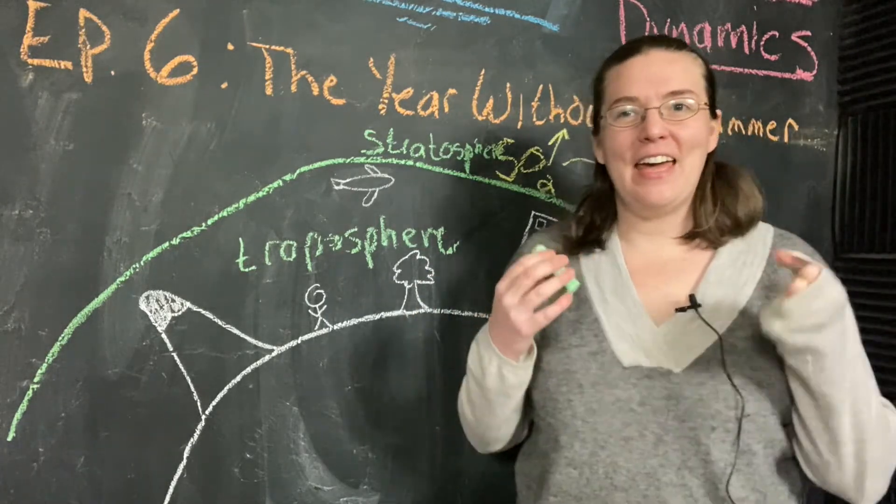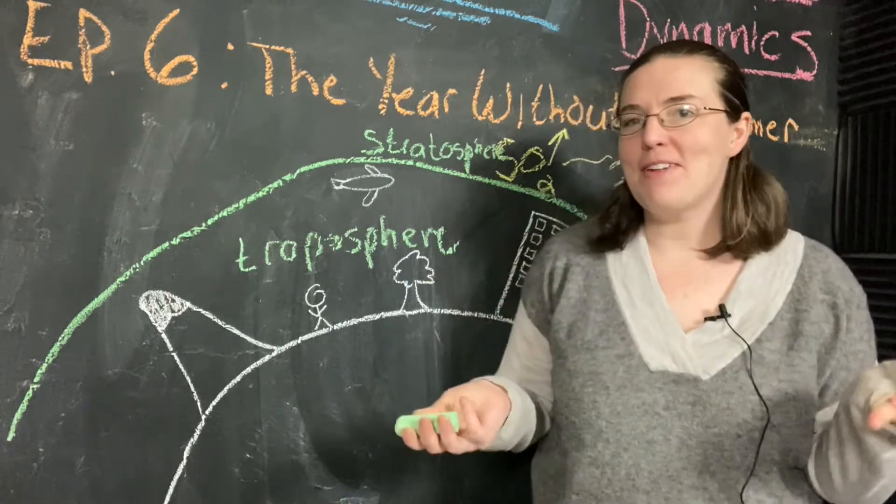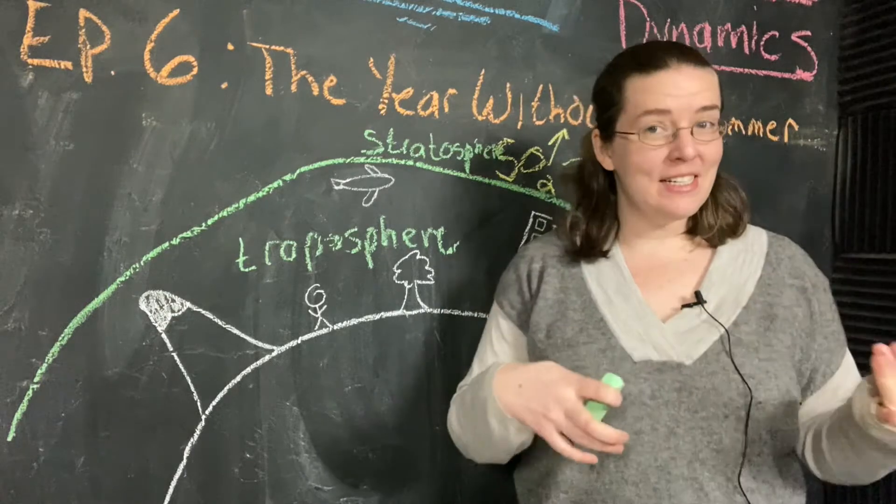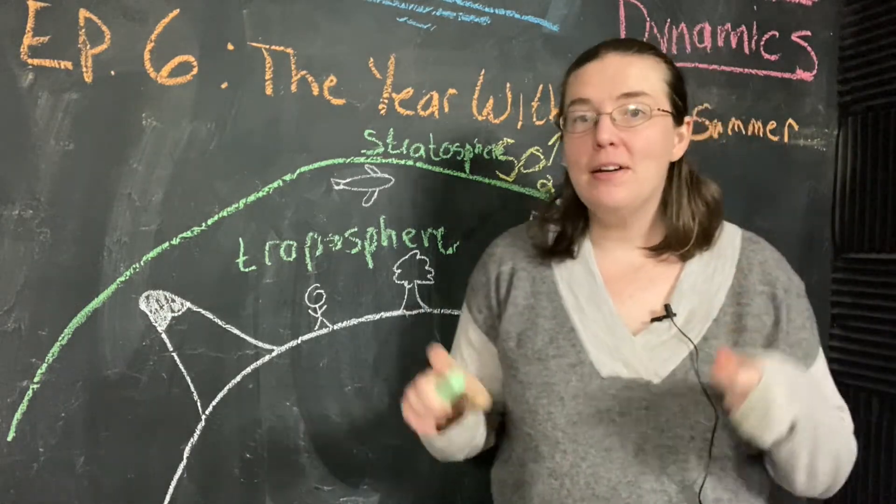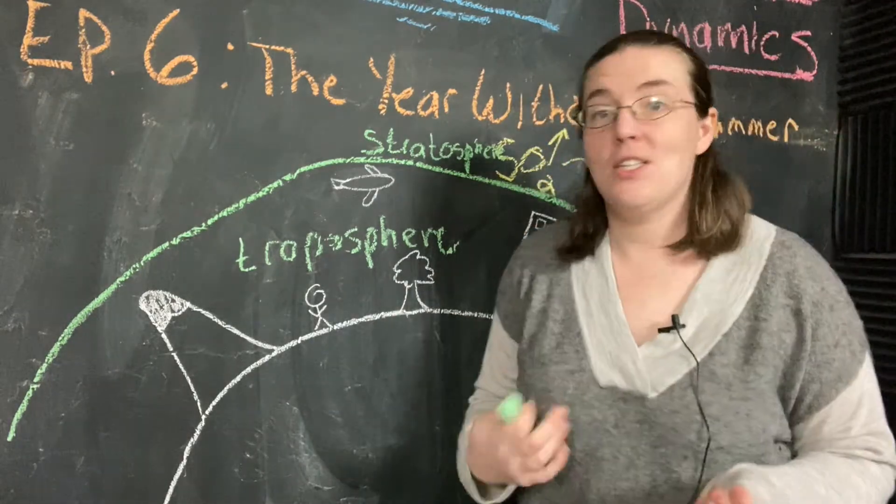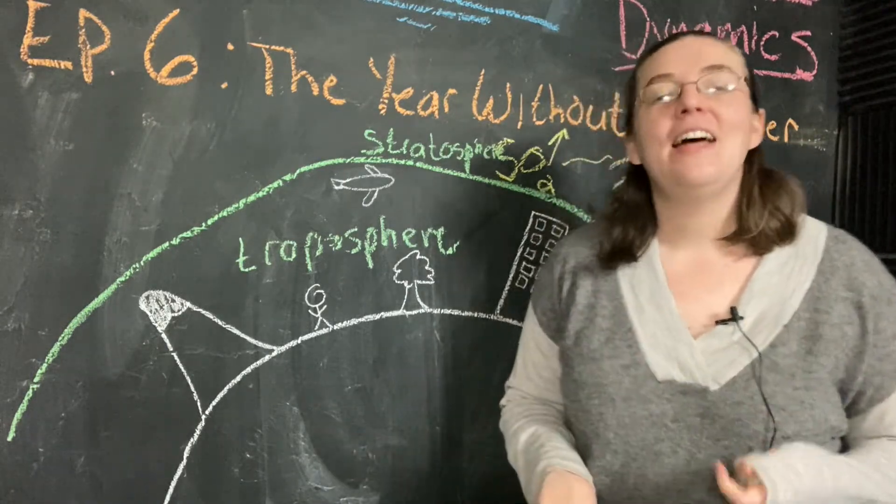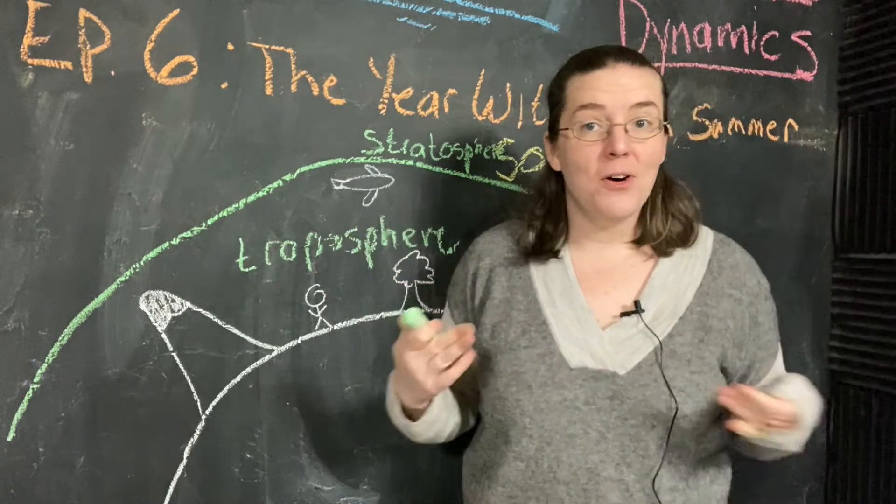How long a specific gas or particulate or aerosol is going to hang out in the atmosphere is called its residence time. That's something we're going to be talking about a lot more moving forward. But for right now, it's just important to remember that because the sulfur dioxide was in the stratosphere, it was able to be around for much longer.